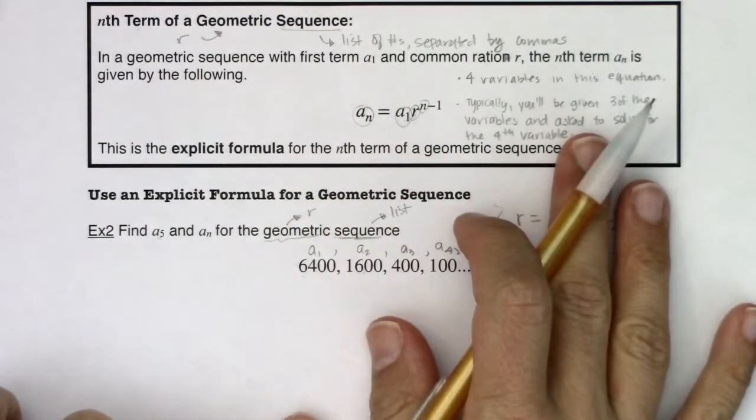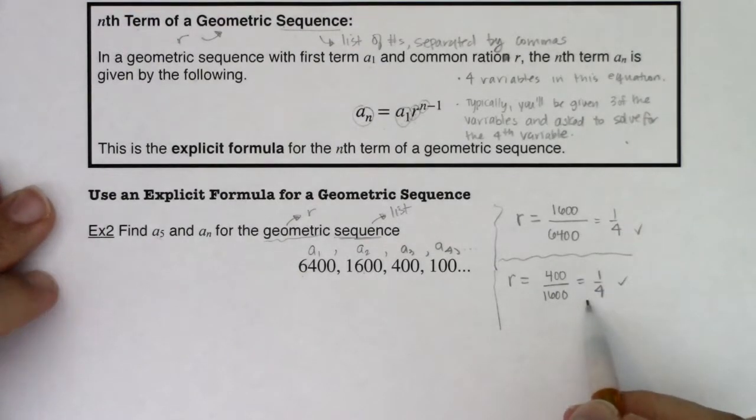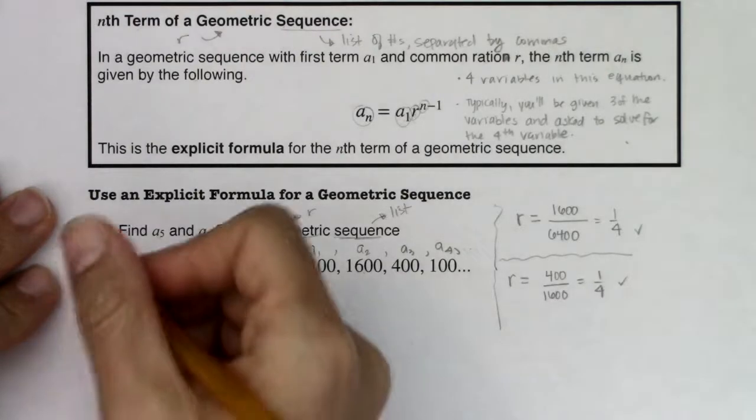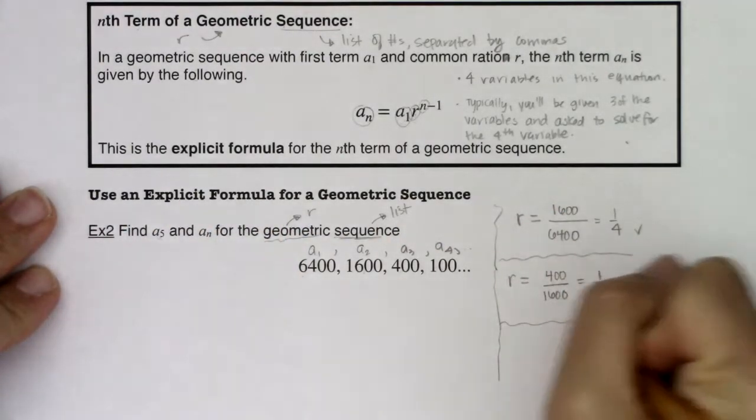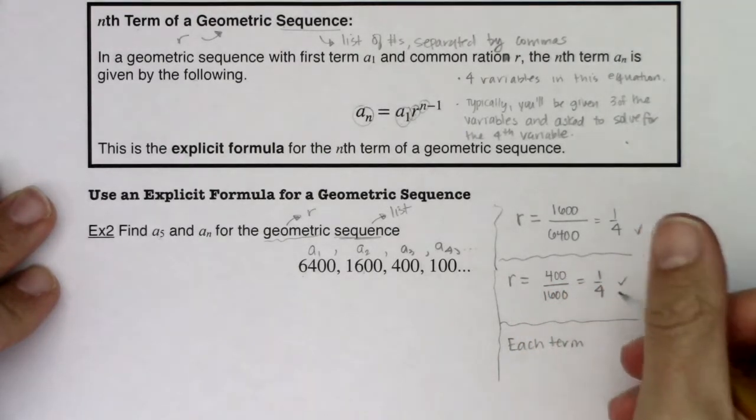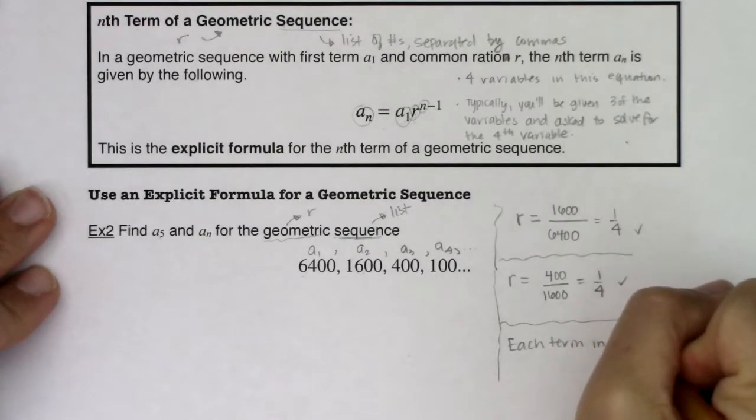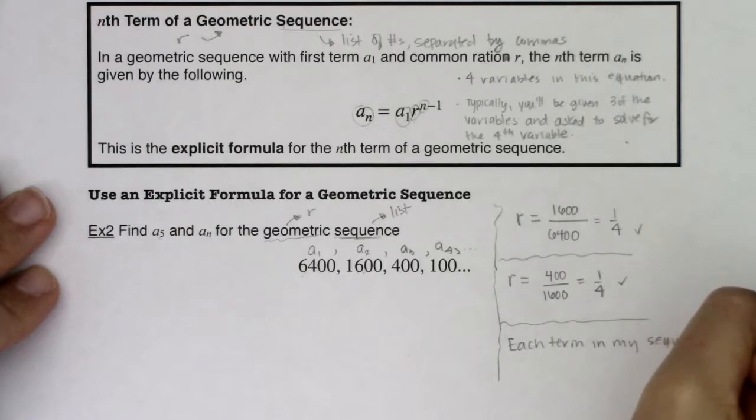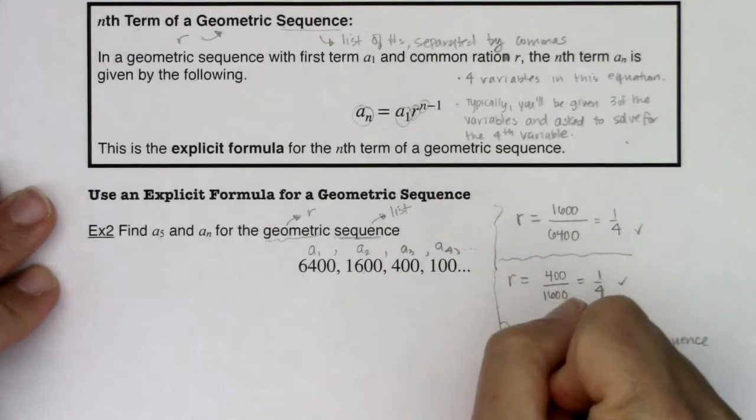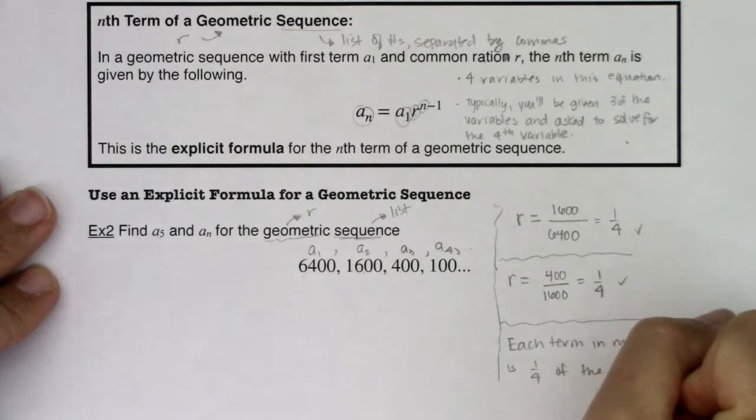Maybe just through multiplication, you can already see what a sub 5 is going to be equal to. But I do want to work these formulas to show you how this is playing out. But at this point, we know each term is 1 fourth of the previous term.